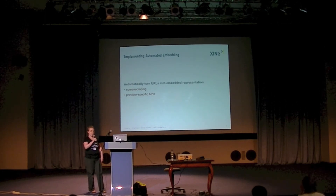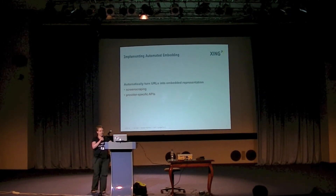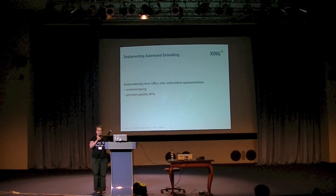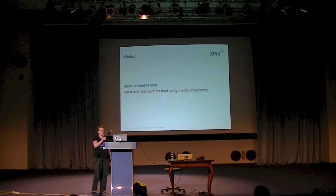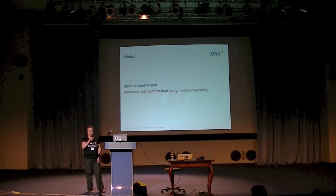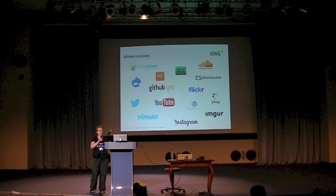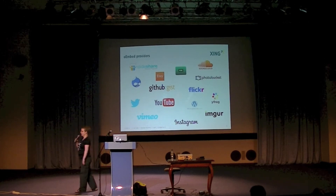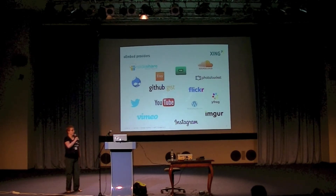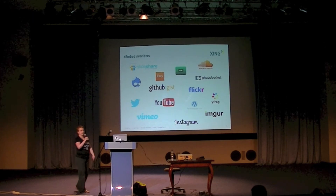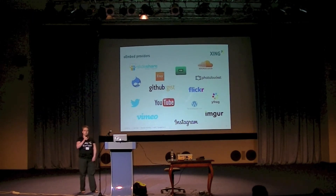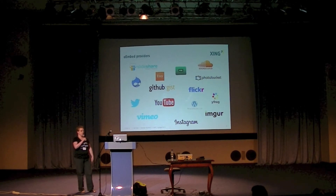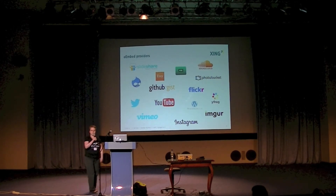It doesn't add up to that much effort if the APIs are not that different or even the same, and this is why we decided to look into oEmbed. oEmbed is an open web standard for third-party media embedding. There are already quite a number of providers out there. All those media providers offer an oEmbed API, so you can embed photos and videos but also code snippets, sound snippets, or product descriptions through oEmbed.